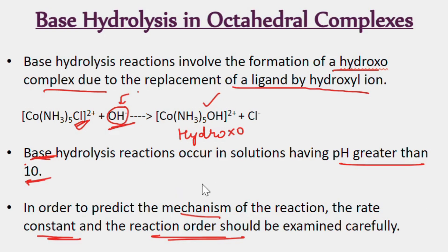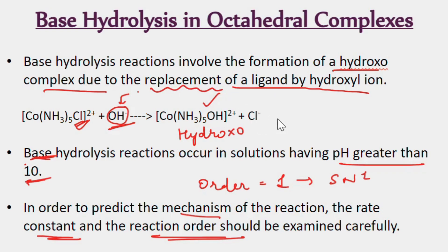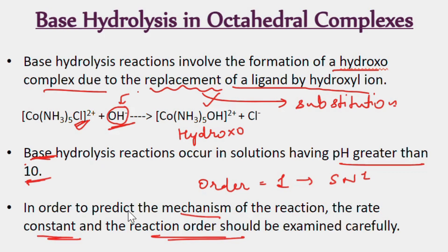If you know the order is 1, then it will proceed through substitution — it means the ligand is replaced by substitution. These are base hydrolysis reactions, which are the same as substitution reactions. Since OH⁻ is a nucleophile, if the order is 1, we call it SN1 (substitution nucleophilic unimolecular), and if the order is 2, it will be an SN2 reaction. So first we need to know the order or the rate constant.